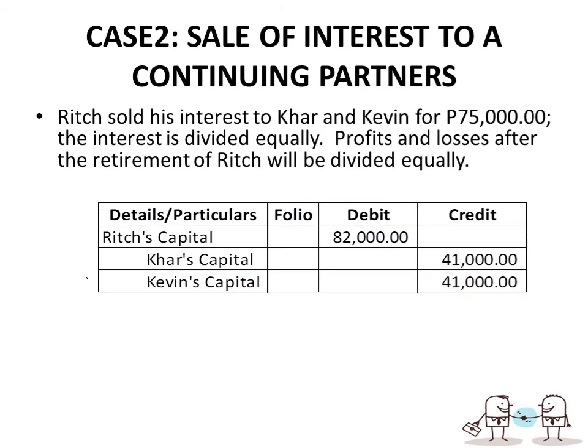Case 2 — Rich sells his interest to the continuing partners Carr and Kevin for $75,000, divided equally. Entry: debit Rich's Capital $82,000, credit Carr's Capital $41,000, credit Kevin's Capital $41,000. The difference belongs solely to Rich since she is the one selling her capital account, and the partnership is separate from the personal transactions of the partners.